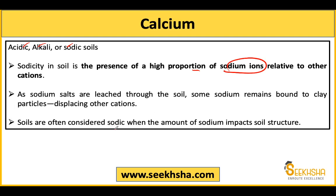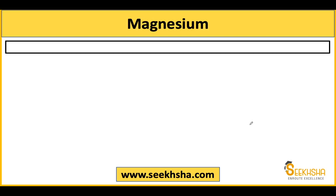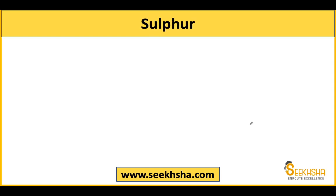Soils are often considered sodic if sodium ions impact the soil structure significantly — ultimately leading to calcium deficiency. For magnesium deficiency, it is similar to calcium — the same conditions that encourage calcium deficiency also encourage magnesium deficiency.